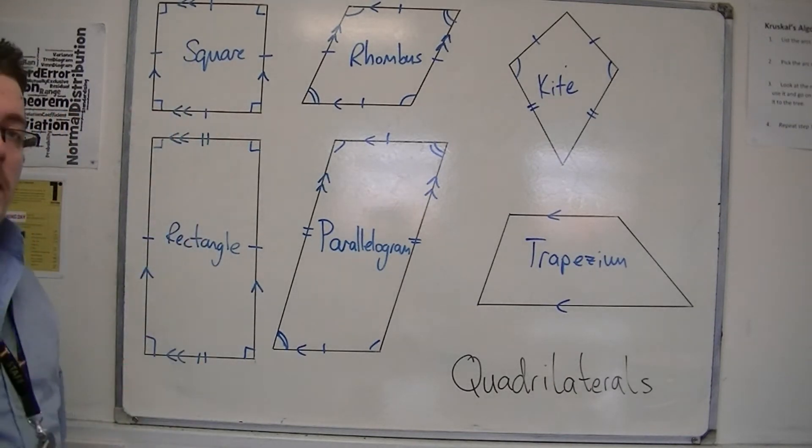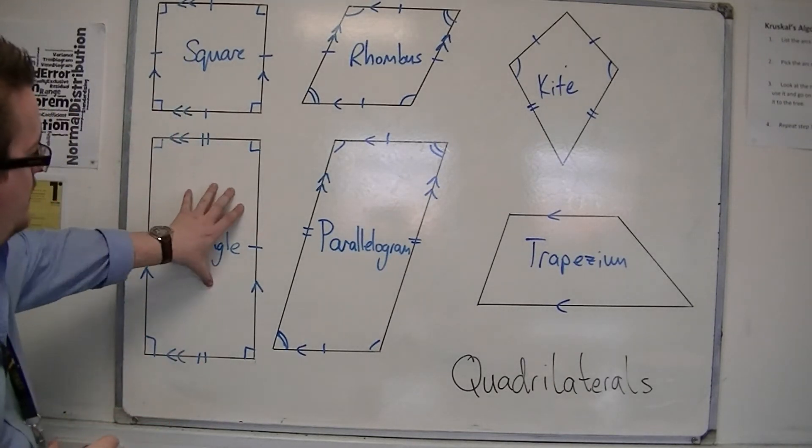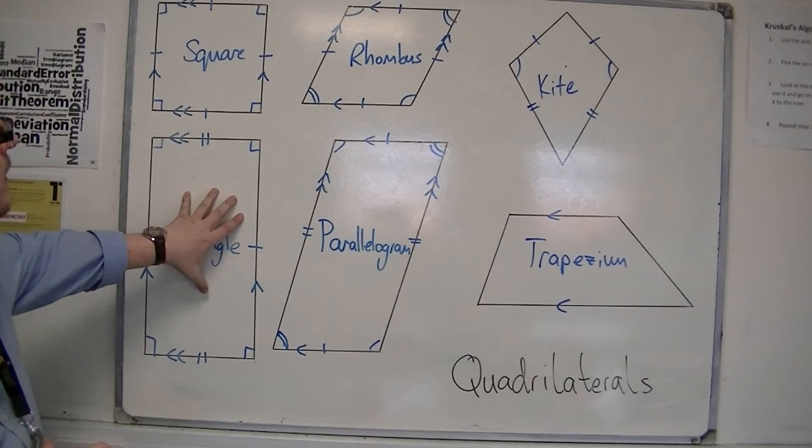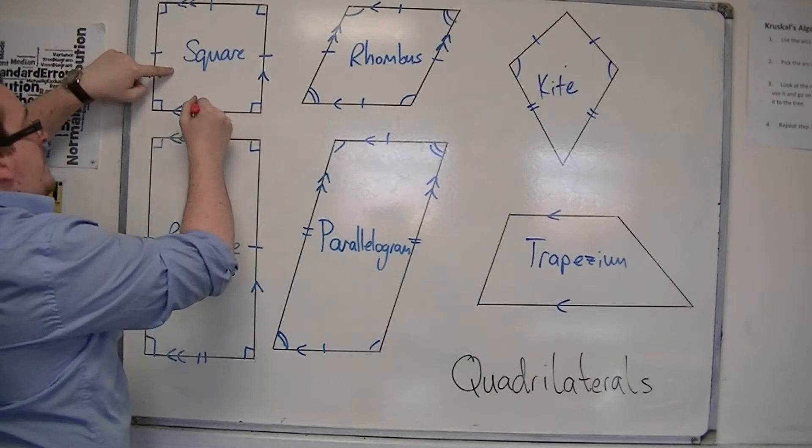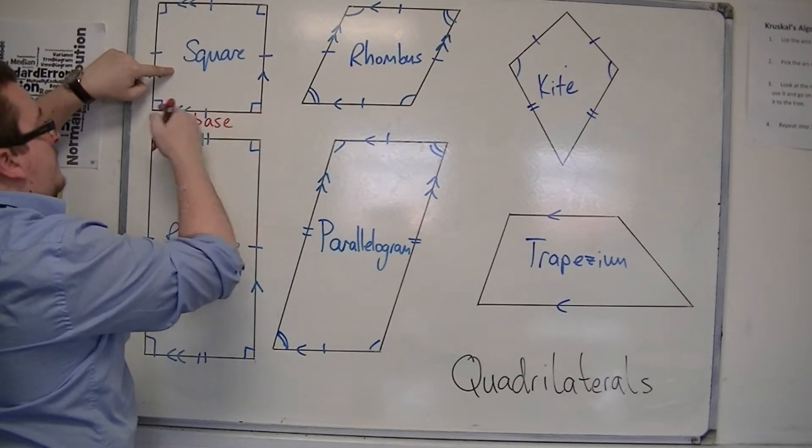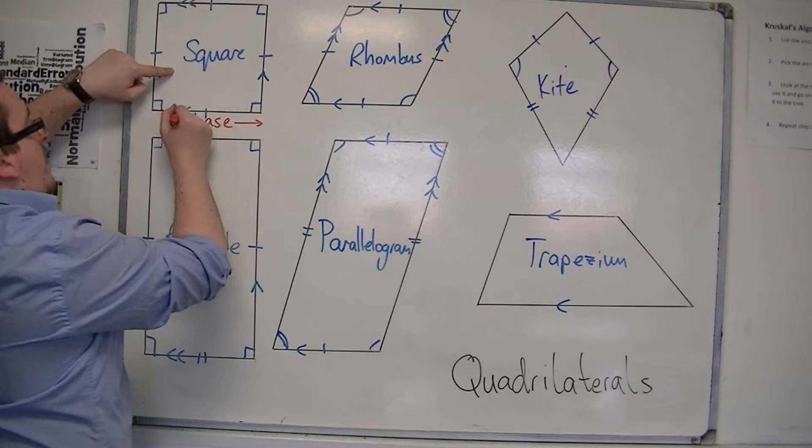The area, as you remember, is what is inside the shape. So the square, the area can be found by multiplying the length of the base by its height.